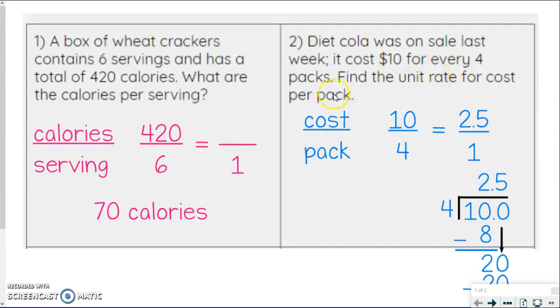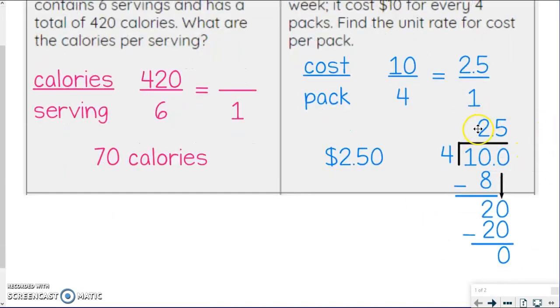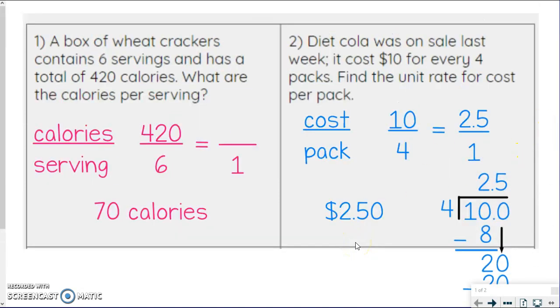But because that number is represented by cost, it's dollars. We don't write dollars as $2.5. We say $2.50. So that's how much it costs for one pack using that rate they gave us going down to the unit rate. And remember, do work off to the side if you need to. Feel free.